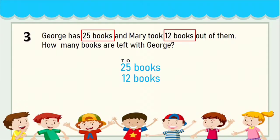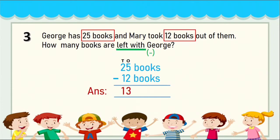How many books are left with George? 'Left' means minus — put the minus sign and write the answer. Subtract 2 from 5 to get 3, and subtract 1 from 2 to get 1. We are talking about books, so write '13 books left.' Notice the word 'took' has come — that means somebody has taken something from him, so the number has reduced.